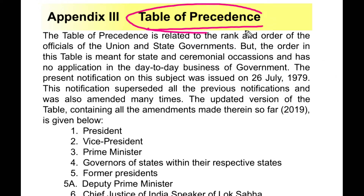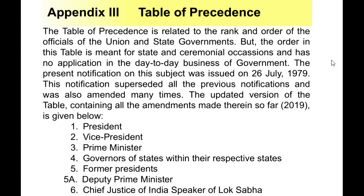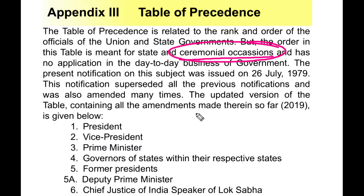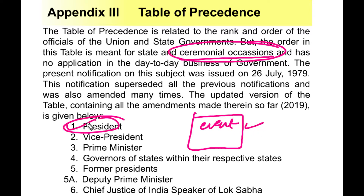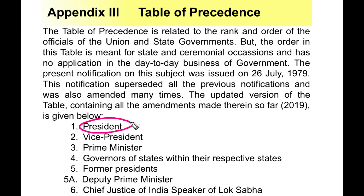We will see the Table of Precedence — how to answer questions about ranks on the Table of Precedence. The Table of Precedence is related to the rank and order of officials in the union and state government. The rank of the president is more than the vice president, and the vice president is more than the prime minister. This is only for ceremonial occasions, not applicable in day-to-day business. The prime minister has the most power, but the president is the ceremonial head.